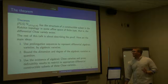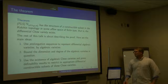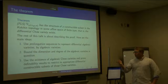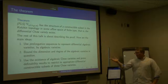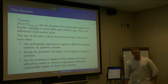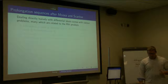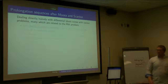The main steps of the proof are: first, find a particular way of representing differential varieties by algebraic varieties; second, bound the dimension, degree, and number of variables of those varieties; and third, look at classical Chow varieties and prove some sort of definability result to restrict to an appropriate definable subset of those Chow varieties.